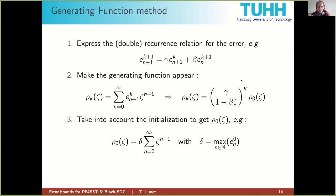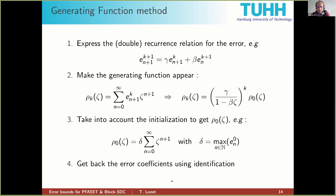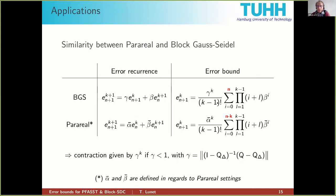Taking into account the initialization to get the expression for all k=0, we then multiply and identify the power series coefficients of the whole terms. There's a little computation mathematically, but at the end we get an error bound by identifying the terms in the power series representing the full expression.